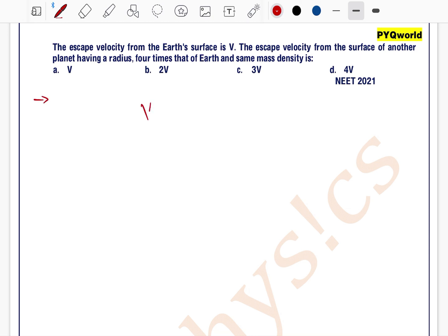See, the question is based upon the escape velocity. So we know that escape velocity can be written as under root of 2 gm divided by r.